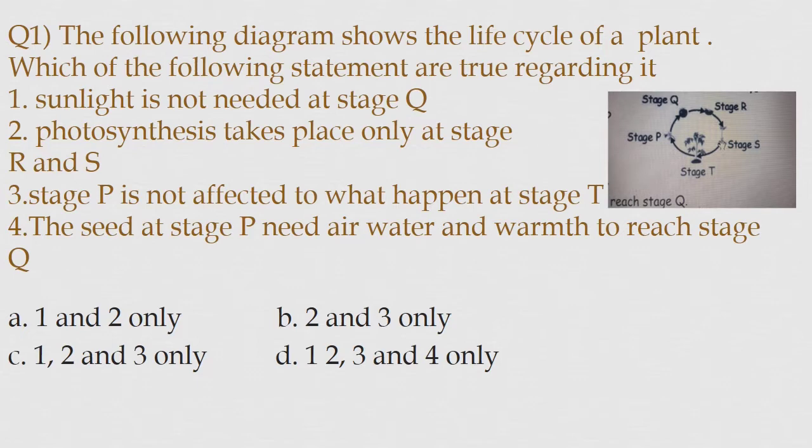3. Stage B is not affected to what happens at stage D. 4. The seed at stage P needs air, water and worms to reach stage Q. Option A: 1 and 2 only.